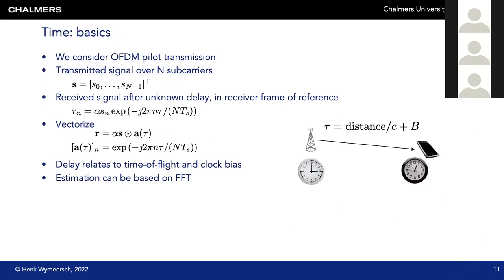The most common way of doing positioning is time-based measurements. A base station sends a signal to a user; they are generally not synchronized, depicted by different clocks. The time of arrival measured at the user depends on the distance over the speed of light plus the clock bias of the user — an unknown that must be estimated. This is also how GPS works: you typically need four satellites — three for position and one for the clock bias.